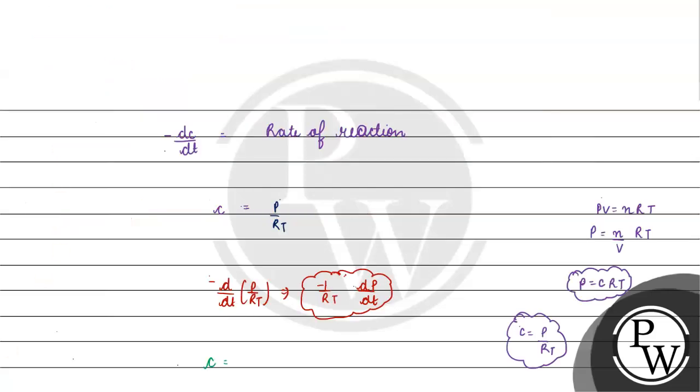We can write the concentration as n/V. What is concentration? The number of moles of solute by volume of solution. So this value we can put in this equation. Minus d/dt of n/V. What will you have? Minus 1 upon V dN/dt.